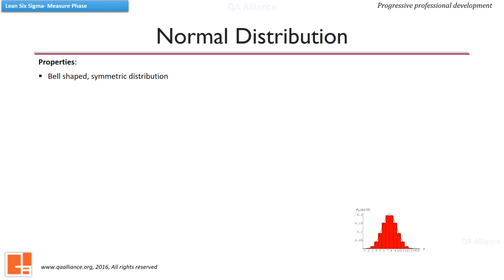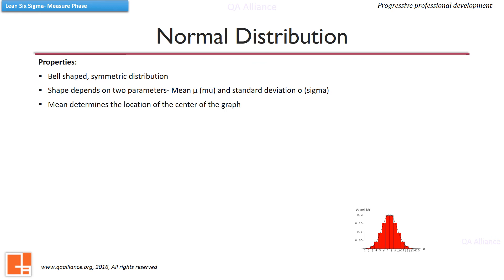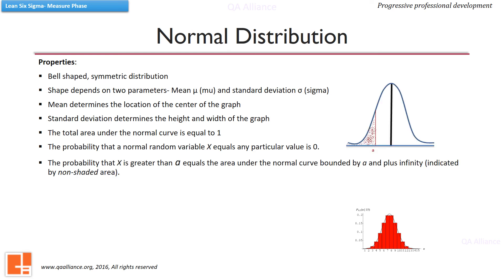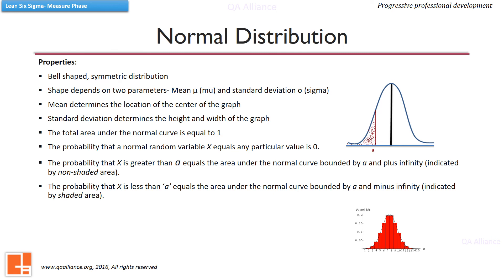Normal distribution has a bell-shaped curve and is a symmetric distribution. Its shape is defined by two parameters: mean and standard deviation. The mean provides the location of the center of the graph and the standard deviation defines the width. When the standard deviation is large, the curve is short and wide; when it is small, the curve is tall and narrow. The total area under the normal curve is 1, and the probability that a normal random variable X equals any particular value is 0. The probability that X is greater than a value A is equal to the area under the normal curve bounded by A and plus infinity, indicated by the non-shaded area in the diagram. The probability that X is less than A is the shaded area bounded by A and minus infinity.